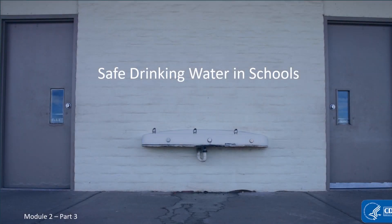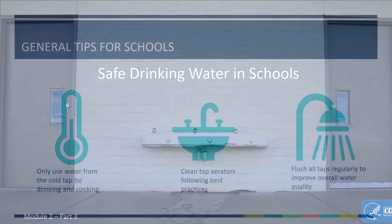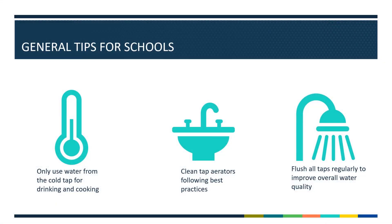Welcome to part three in the online training series about drinking water safety in schools. EPA's 3Ts guidance includes several general tips for schools to reduce exposure from lead, including only using water from the cold tap for drinking and cooking, cleaning tap aerators following best practices, and flushing all taps regularly to ensure water is regularly moving. This will improve overall water quality.